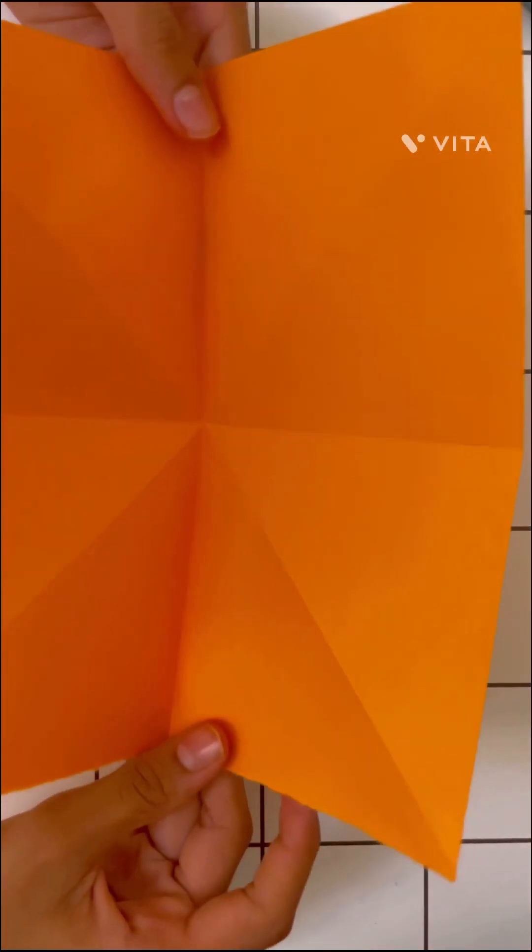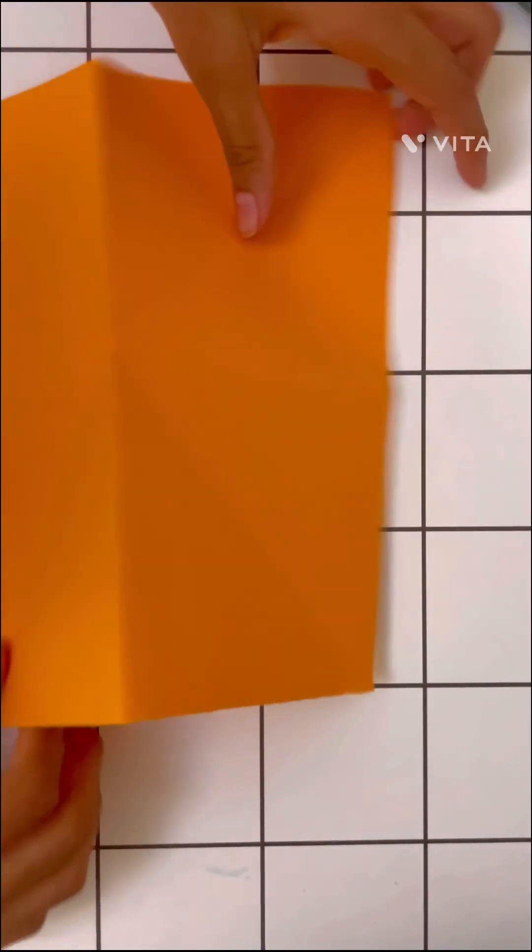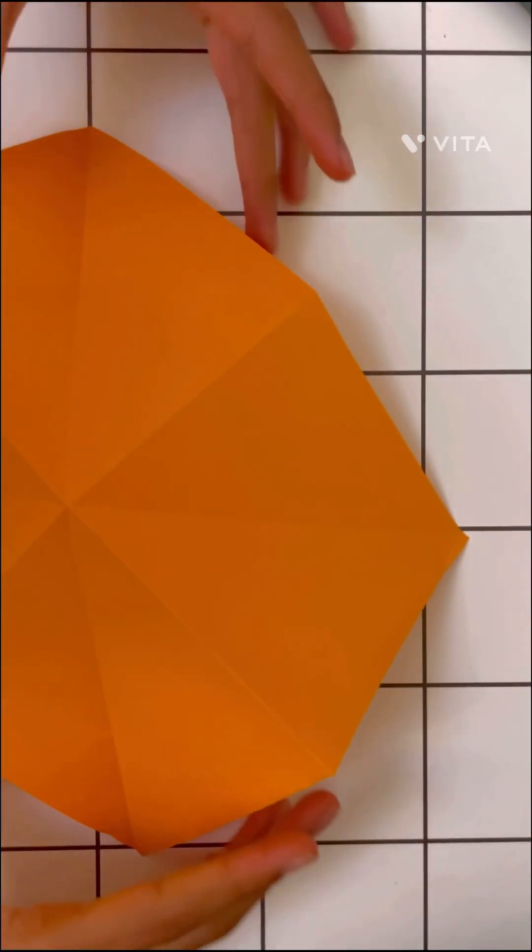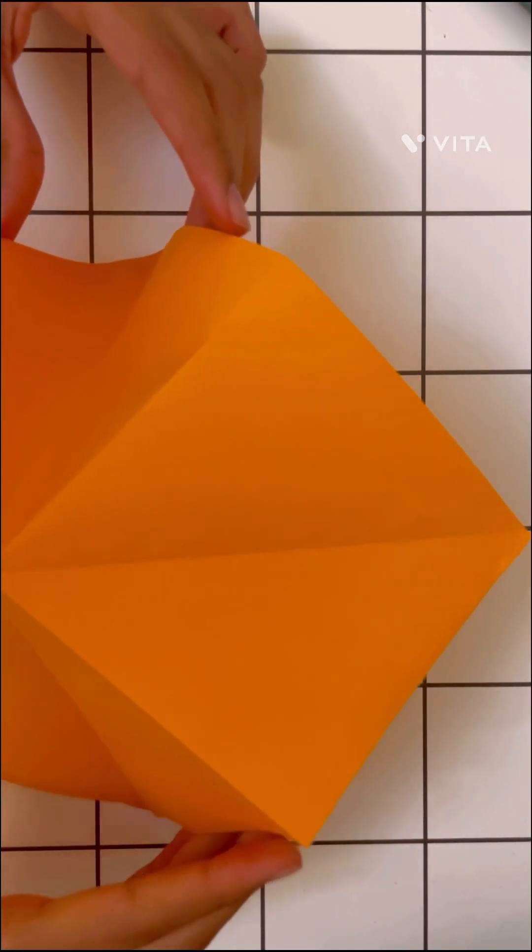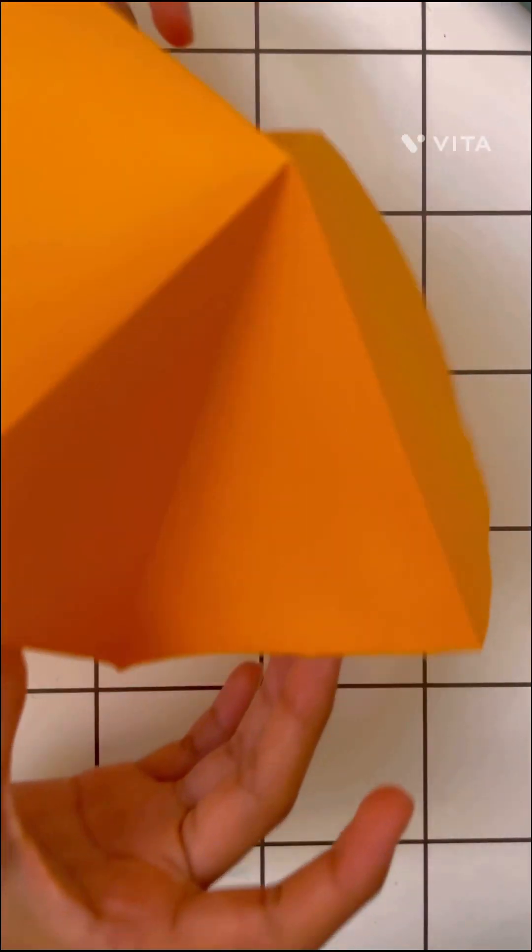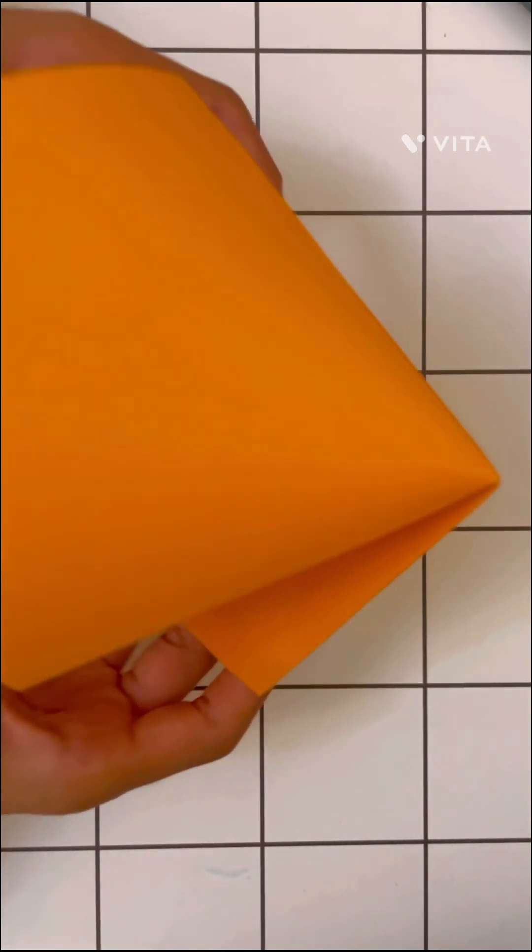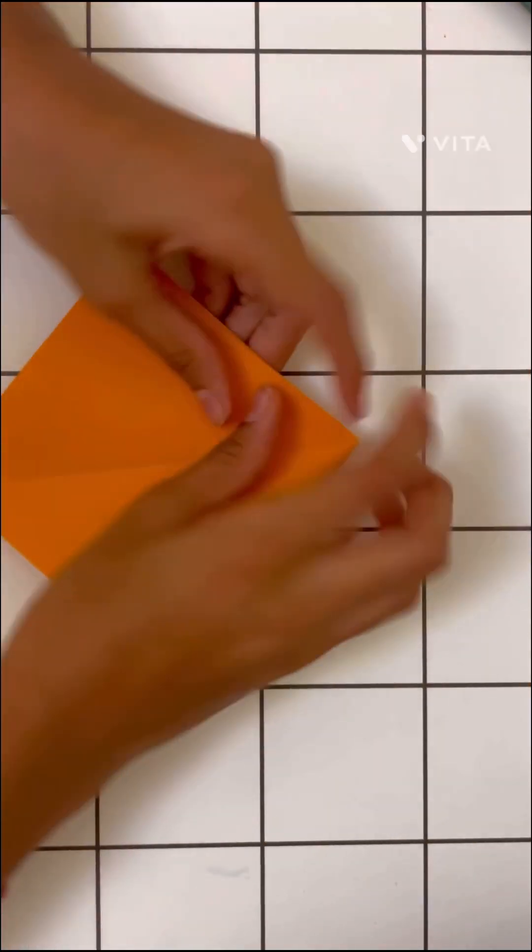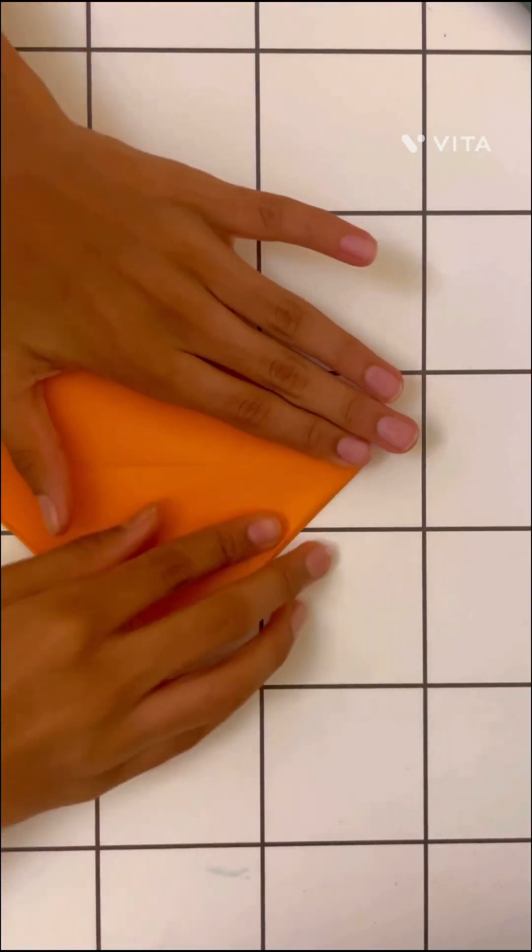After this, you might need to flip the paper. You'll see that the paper is already trying to get into that shape, so you bend these edges so that it goes like this, and then you just press these to get like a diamond shape.